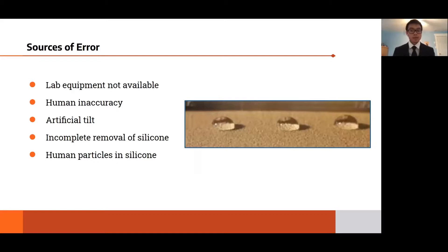In terms of error, we had no atomic force microscope. Hence, we could not precisely measure the contact angle. Secondly, there was human error due to the inaccurate responses between the human eye and the hand. Additionally, the photos of the droplets were not taken exactly perpendicular to the substrate. Thus, an artificial tilt angle was created which could have increased or decreased the measured contact angle.